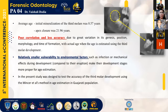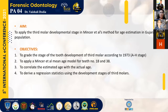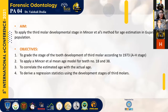The present study was designed to test the accuracy of the third molar development using the Minsar et al. method for age estimation in the Gujarati population. The aim is to apply the third molar developmental stage in the Minsar et al. method. The objectives are: to grade the stage of tooth development of the third molar according to the 1973 A-to-H stages, to apply the Minsar et al. mean age model for teeth numbers 18 and 38, to correlate estimated age with actual age, and to derive regression statistics using the developmental stages of the third molar.